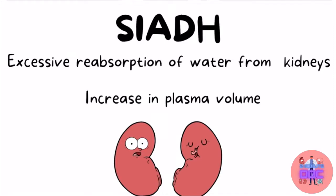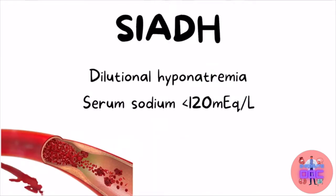In SIADH, there is excessive production of antidiuretic hormone leading to excessive reabsorption of water from the kidneys. This leads to an increase in plasma volume because most of the water that would be lost in the urine is absorbed back into the plasma. As a result, the blood gets diluted, leading to apparently low serum sodium levels — usually less than 120 mEq/L. This condition is called dilutional hyponatremia, which is commonly seen in SIADH.